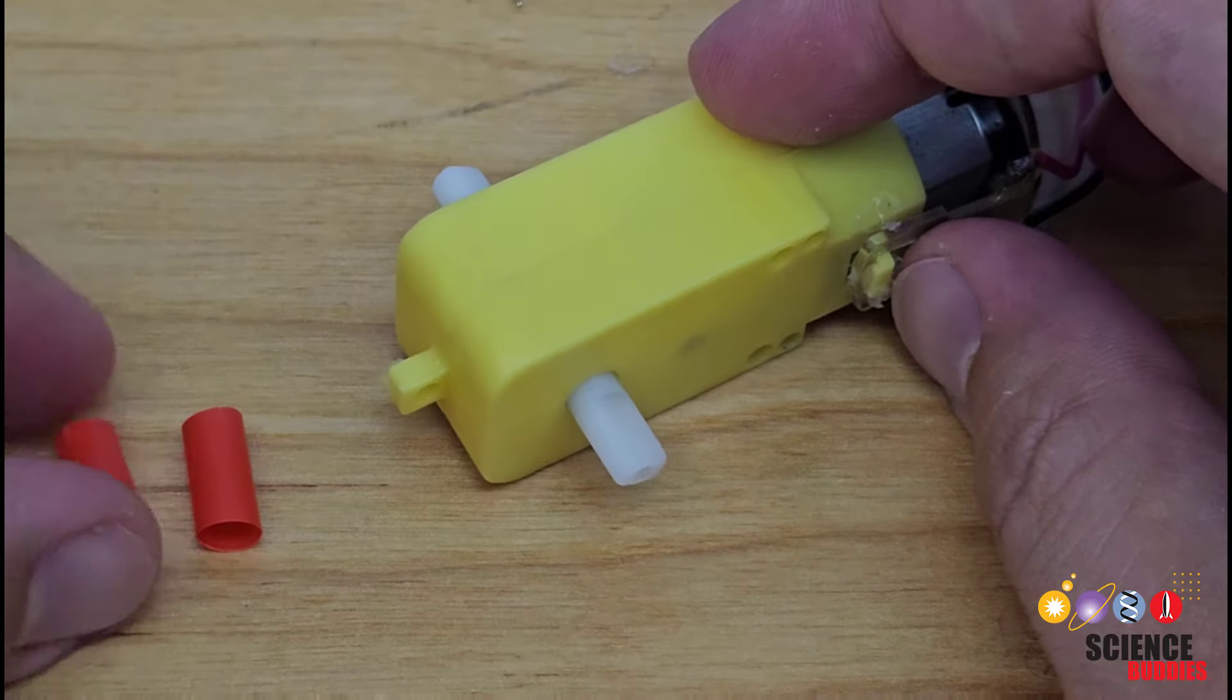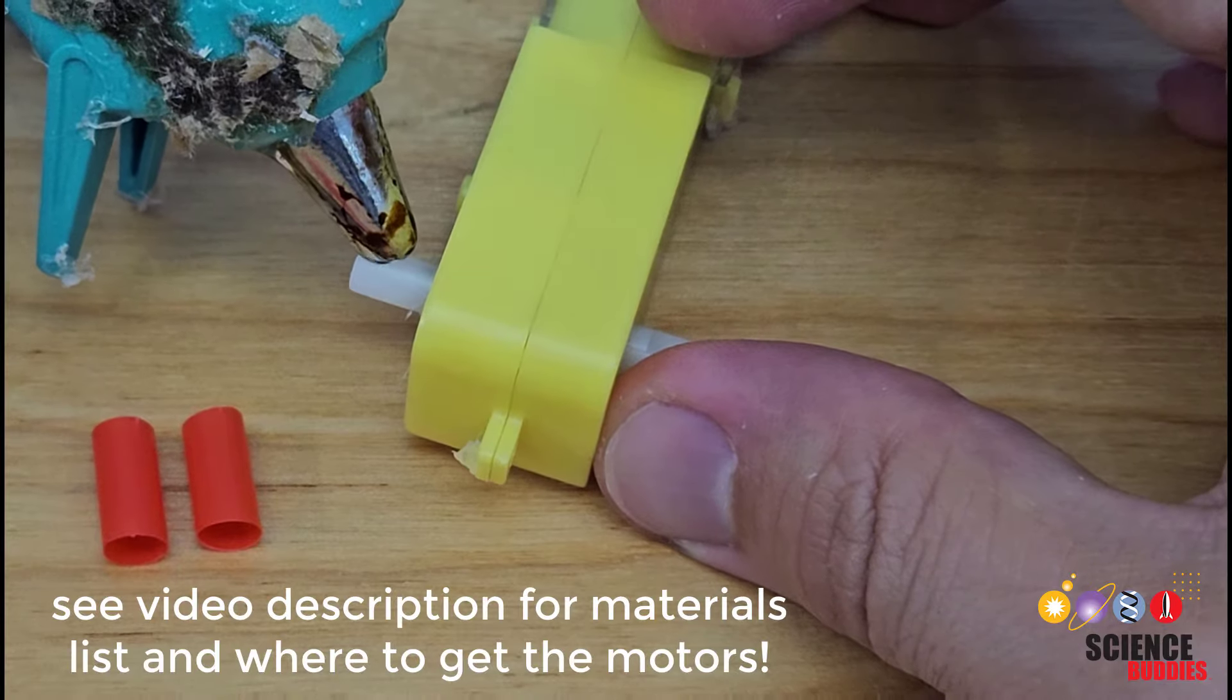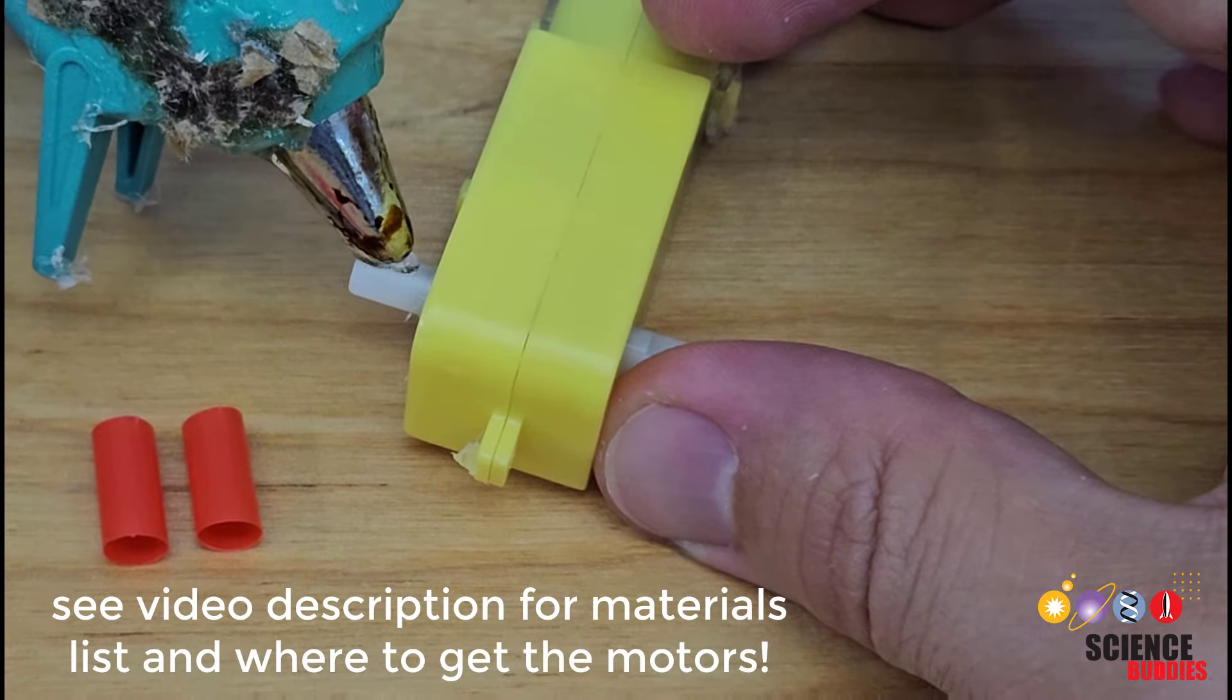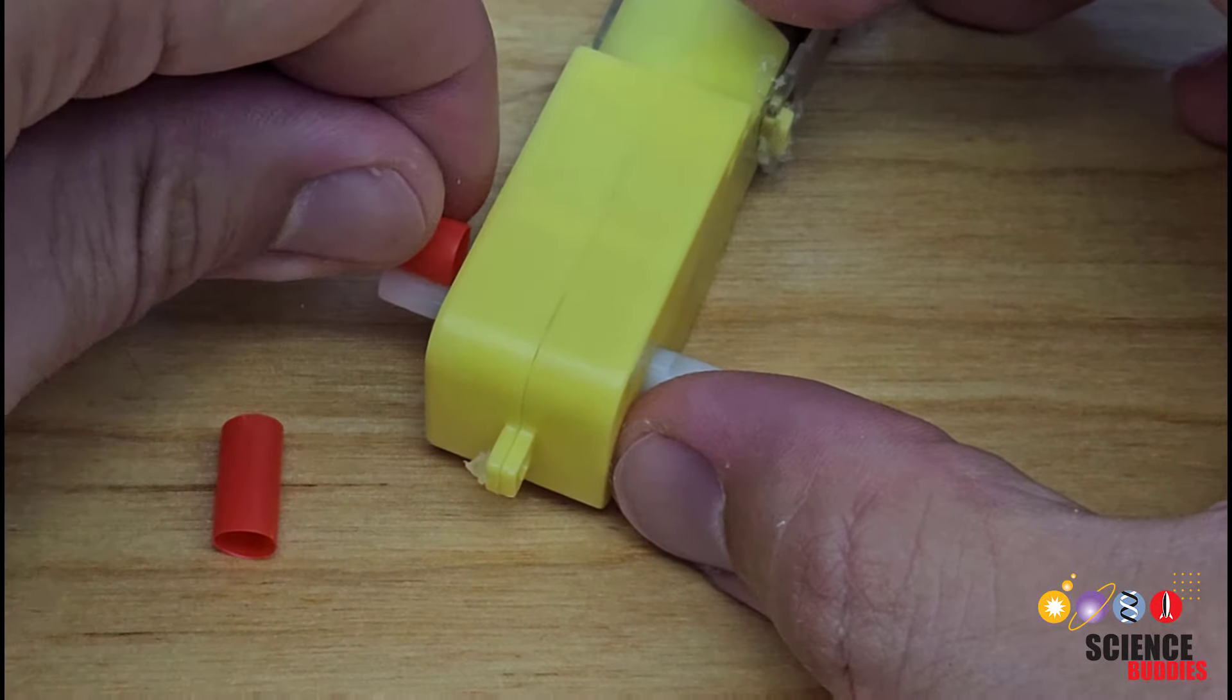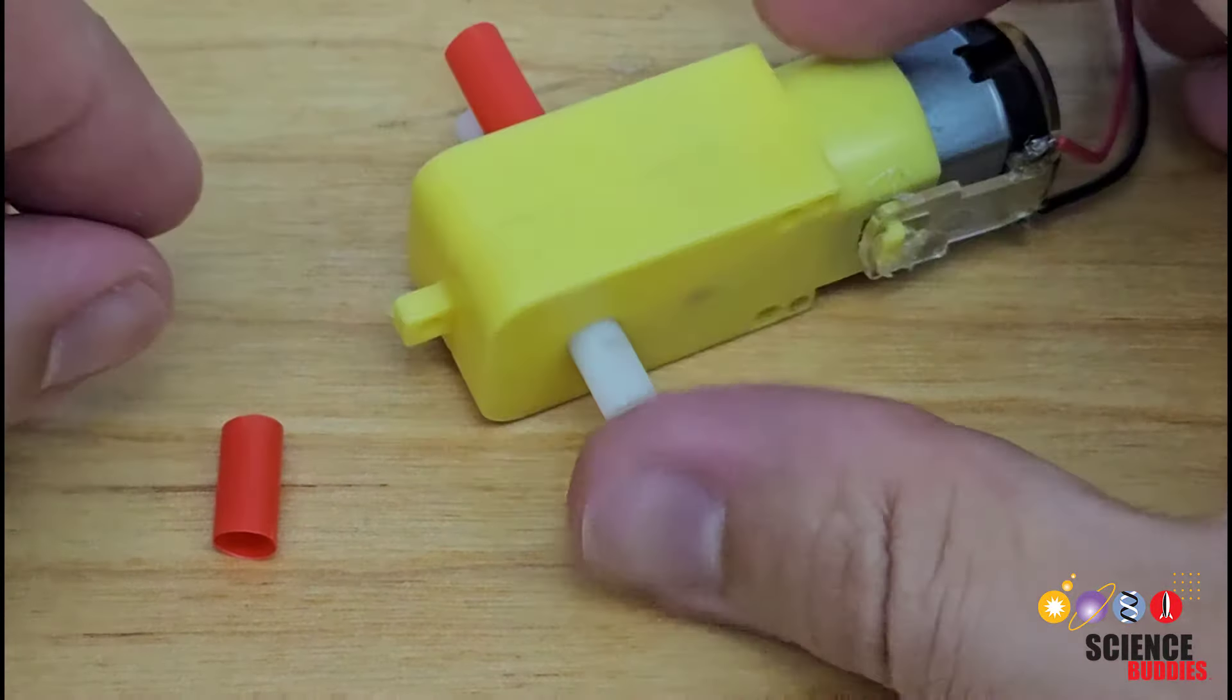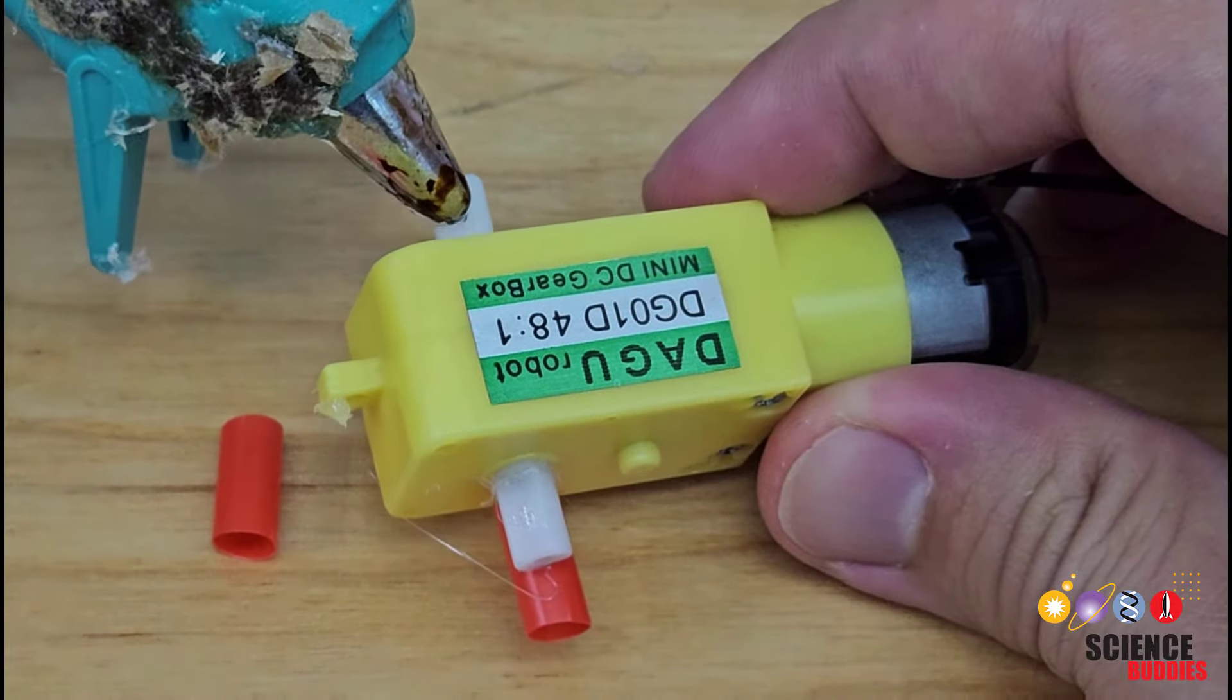To get started, cut two very short pieces of straw and glue one to each side of the motor shaft, making sure that they are on opposite sides. So while one is on the top of the shaft, the other should be on the bottom. That's what's going to ensure that one foot is on the ground while the other foot is in the air.